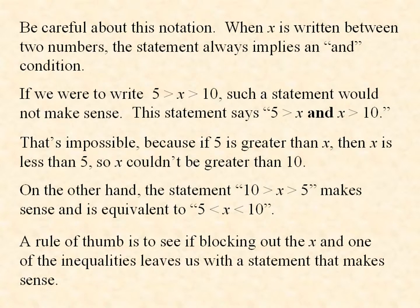A rule of thumb is to see if blocking out the x and one of the inequalities leaves us with a statement that makes sense. For example, if we block out this x and its inequality, we have 10 > 5, and 10 greater than 5 makes sense. And if we block out this x and its inequality, we are left with 5 < 10, and that makes sense.